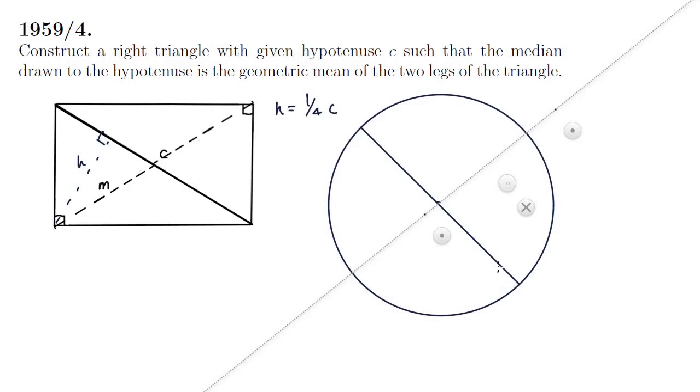How would we go about finding h then? Because remember h is a quarter of c. So half of c we'll know is the radius. How would we find a quarter of c?